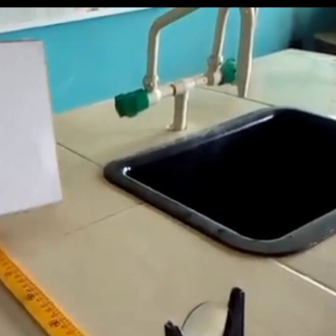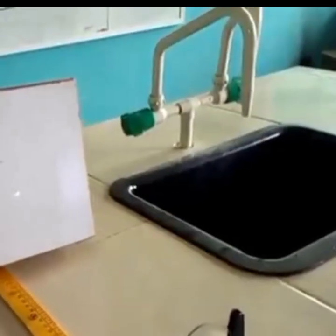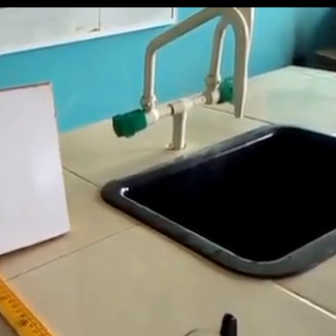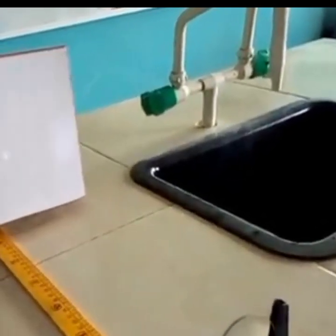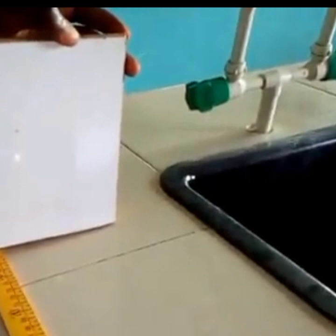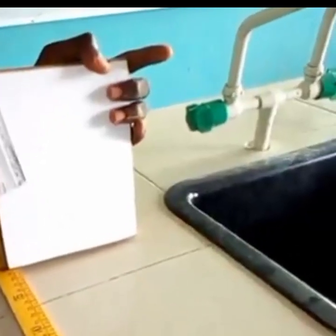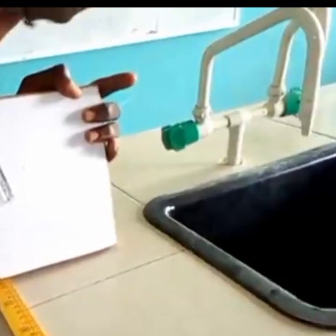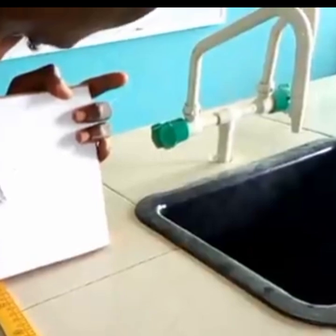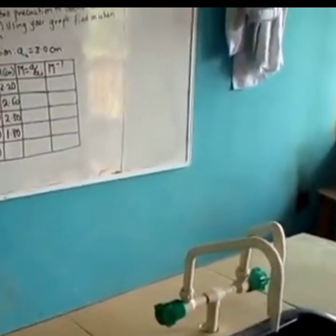Let's move to 45 centimeters. We can see the image gets diminished as we increase the distance of the object. Finding the sharpest image around this region, we take our measurement from here. The result is 1.8. So we record 1.80 centimeters for u equals 45.